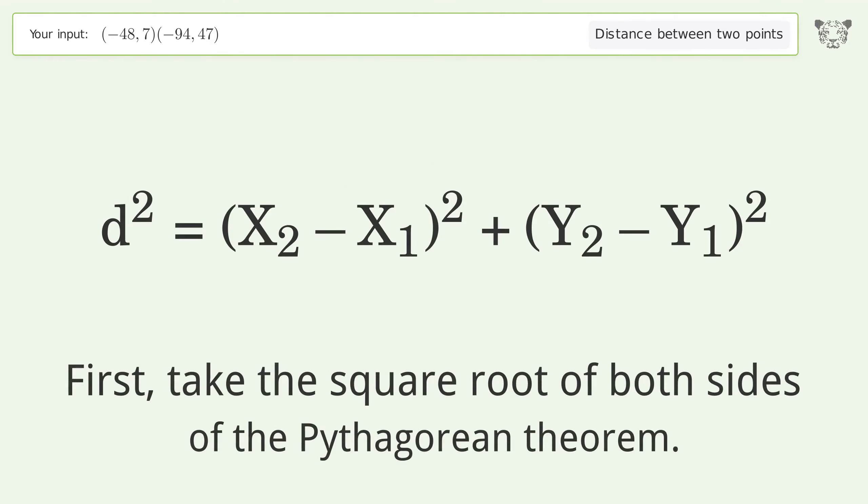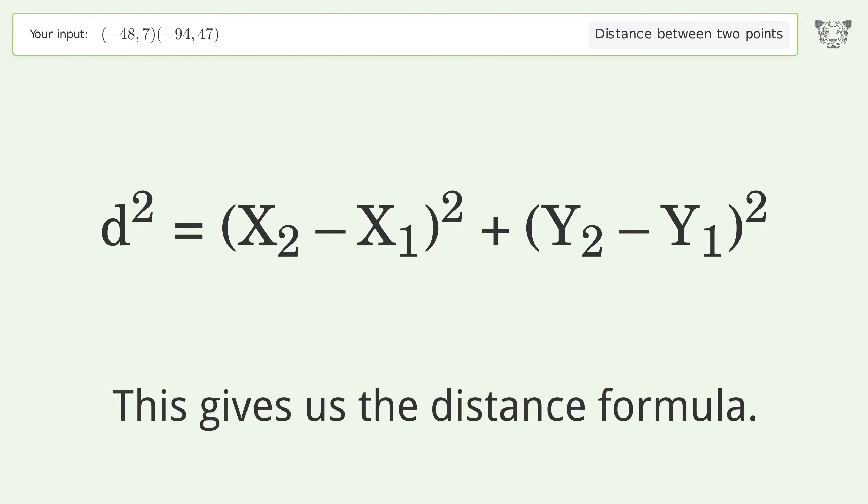First, take the square root of both sides of the Pythagorean theorem. This gives us the distance formula.